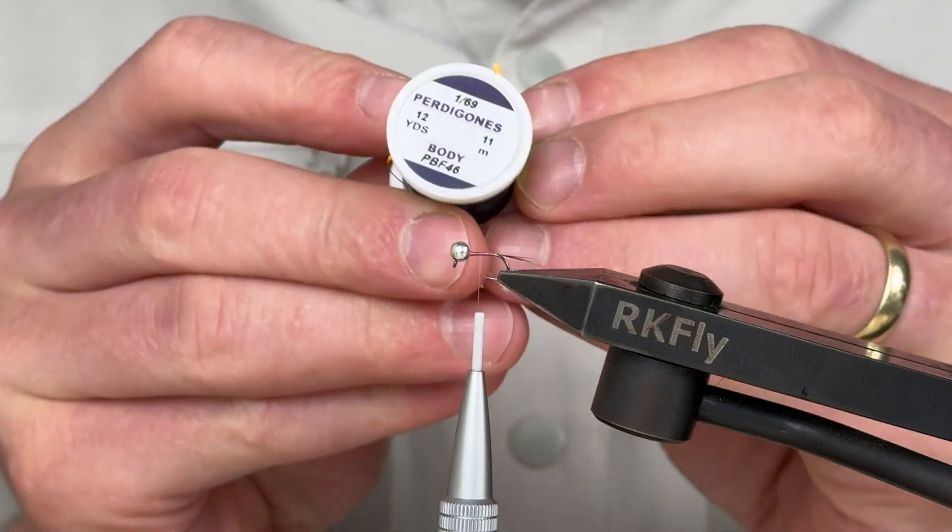Take the UV glue, apply a drop to the body, and using a needle, spread the glue all over the body, again aiming for a conical shape. Make sure you take care with this step, as the final look of your entire fly depends on this process. Cure with a UV lamp, or you can add UV glue as needed.